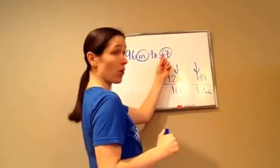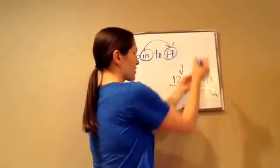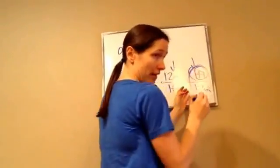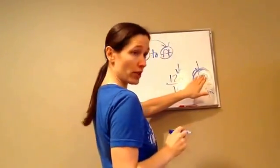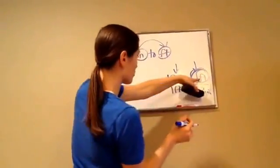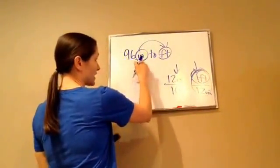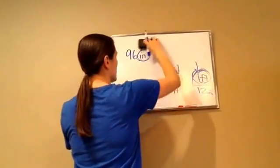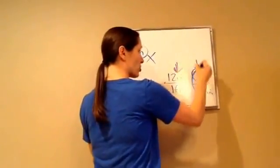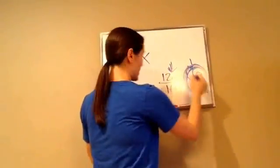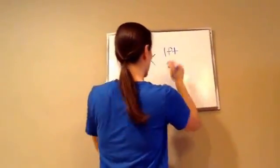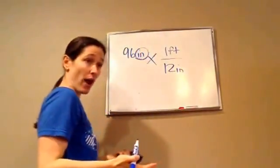The second one. Because I'm going to feet, we want the one with the feet on top. Whatever they're asking for, you want that on top. So now I'm going to use 1 foot over 12 inches. I've got 96 inches, and you're going to multiply that by this unit multiplier — 1 foot over 12 inches. Is that going to be right? Let's look.